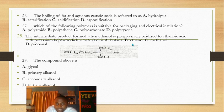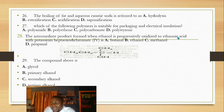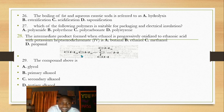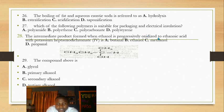Question 28: the intermediate product formed when ethanol is progressively oxidized to ethanoic acid. A primary alkanol oxidizes to an alkanal first — so ethanol becomes ethanal before becoming ethanoic acid. The intermediate is ethanal.